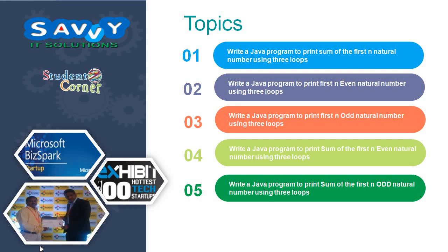Write a Java program to print the sum of the first n natural numbers using three loops. In the previous video, we printed the first n natural numbers. Now we are finding the sum of the first n natural numbers — that is exactly the difference.